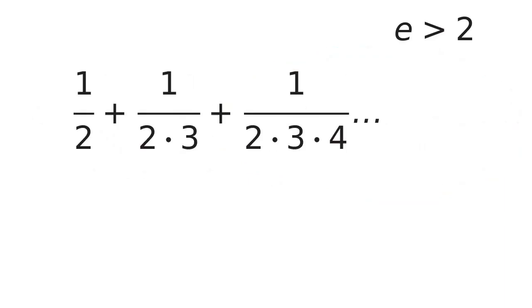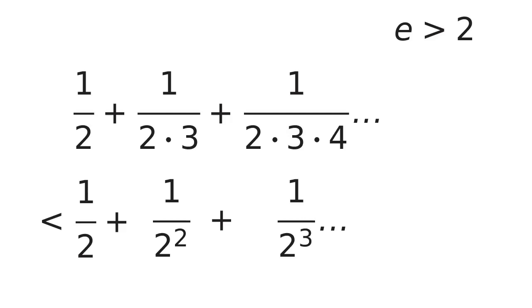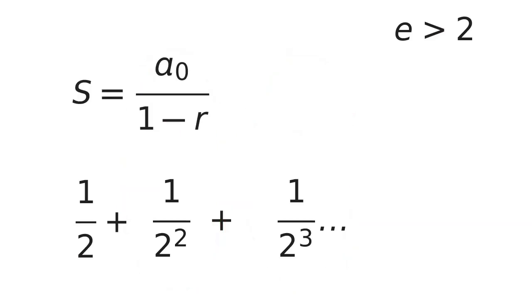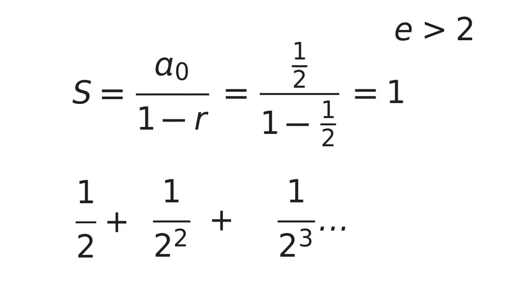Here's that sum again with the factorials broken down. Compare it to the sum of a geometric series with a common ratio of 1/2. It must be less than this geometric series because each term after the first is less than the corresponding term in the geometric series. Recall the formula for the sum of a geometric series: S is the sum, A-naught is the first term, and R is the common ratio. Plugging in those elements, we see that their sum is 1. So the series from e must be less than 1.